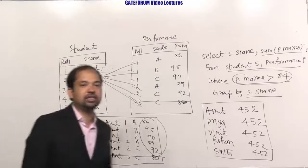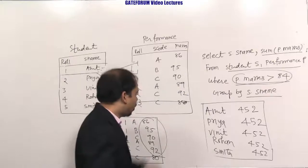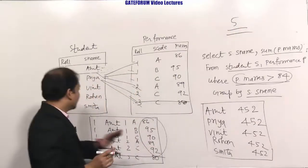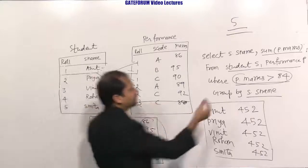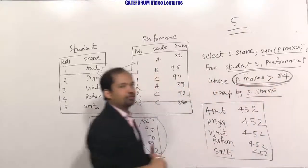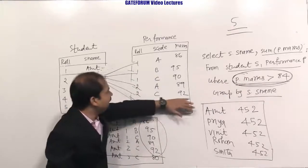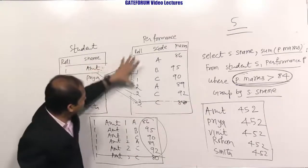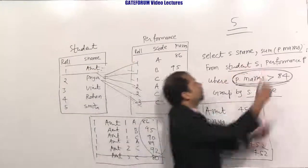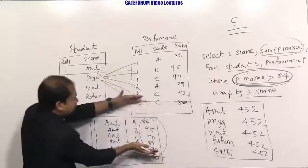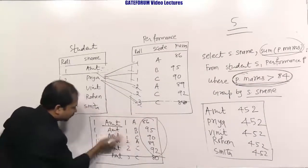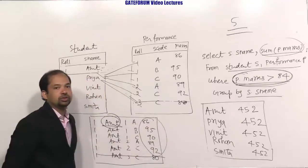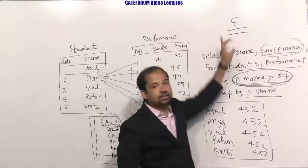The final result has 5 rows — one for each student name (Amit, Priya, Binith, Rohan, Asmita), each with a SUM of marks equal to 452. So the number of rows returned by the SQL query is 5.